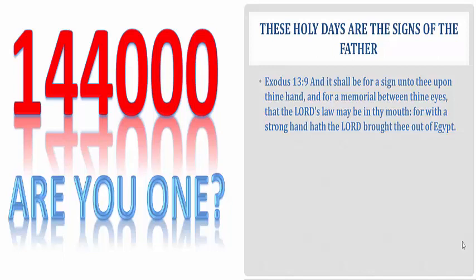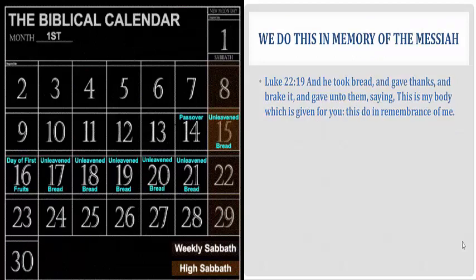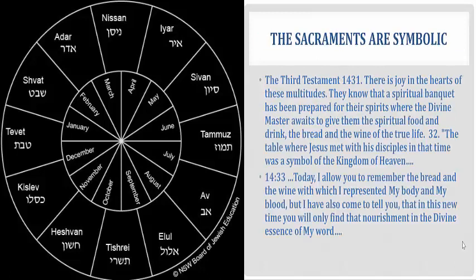Another thing we have to understand about the feast days is that they are a sign of the Father. You see in Exodus chapter 13 verse 9 — these are that sign that we hear about put on our hand and our forehead, or between our eyes. If you think of this as the mark of the Father, keeping these feast days is the mark of the Father. One would argue that not keeping them would be the mark of the beast. Now, we do these feast days in remembrance of the Messiah. You remember in Luke chapter 22 verse 19, when it was talking about the Last Supper and how when the Messiah gave them the cup to drink with the wine in it, he told them to do this in remembrance of him. And so this is one of the reasons why we do this every year — it was a direct order from the Messiah telling us to do it in remembrance of him.